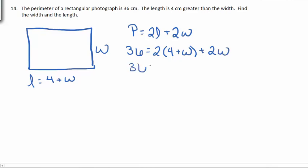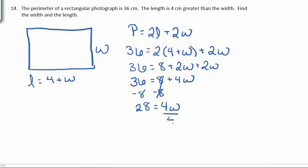So 36 is equal to 8 plus 2 W plus 2 W. Combining like terms, 2 W plus 2 W is 4 W. Then we'll subtract the 8 over. 36 minus 8 is 28, equal to 4 W. Dividing both sides by 4 gives 7 is W. So the width is 7. What about the length? Well it's 4 plus W, so 4 plus 7. So the length here will be 11.